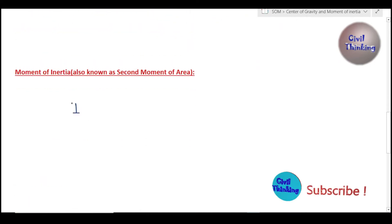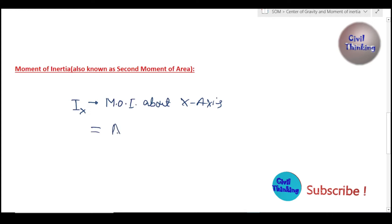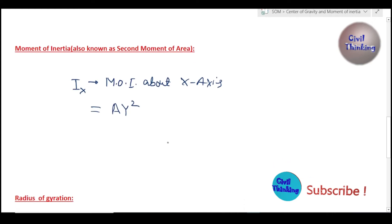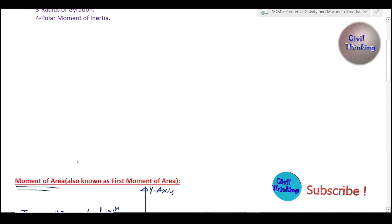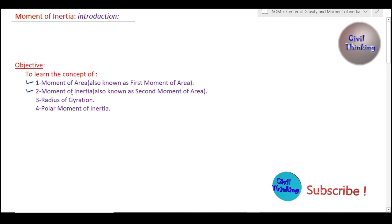We denote moment of inertia with I. So Ix is the moment of inertia about the x-axis, equal to A times y-bar squared. And Iy is the moment of inertia, or second moment of area, about the y-axis, equal to A times x-bar squared.